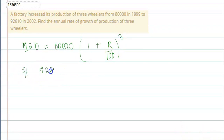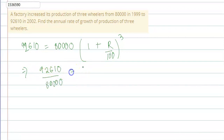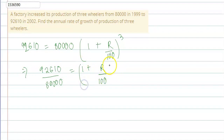This will come from 92,610 by 80,000 equals (1 + r/100) whole cube.